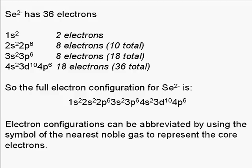So the electron configuration of the selenide ion is 1s2, 2s2, 2p6, 3s2, 3p6, 4s2, 3d10, 4p6.